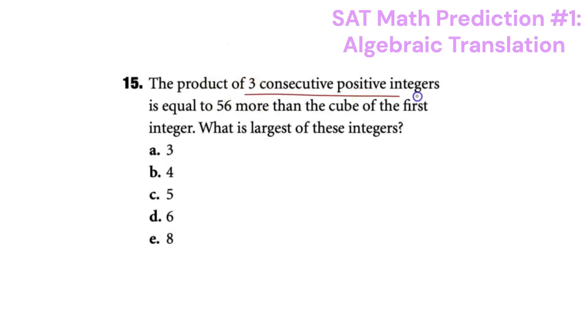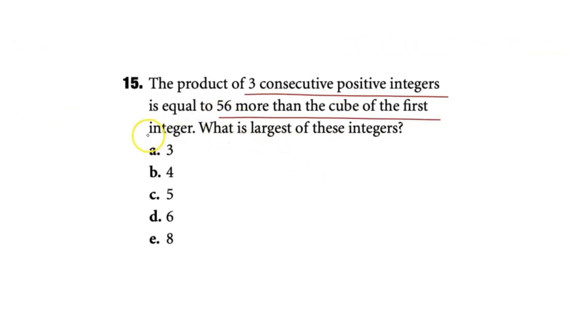The product of three consecutive positive integers is equal to 56 more than the cube of the first integer. What is the largest of these integers?